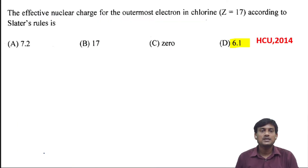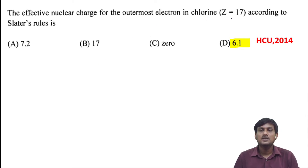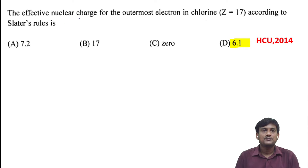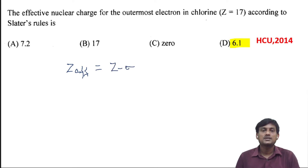First question: the effective nuclear charge for the outermost electron in chlorine, Z equal to 17, according to Slater's rule. According to Slater's rule, the effective nuclear charge Z_eff is equal to Z minus the screening constant. We have to calculate the screening constant. In order to do that, first we have to write down the electron configuration of chlorine.